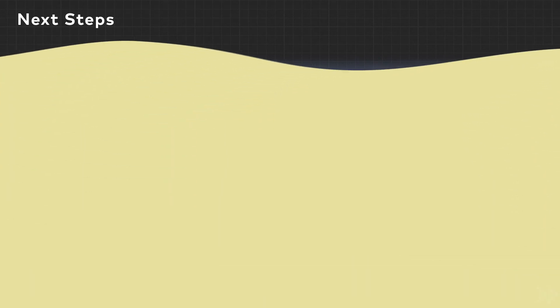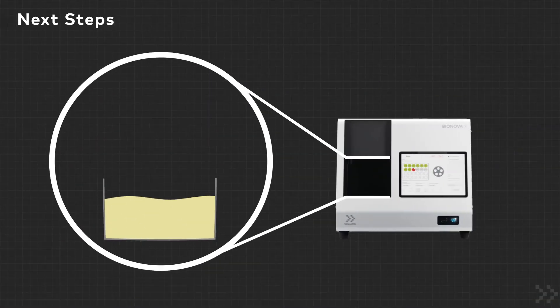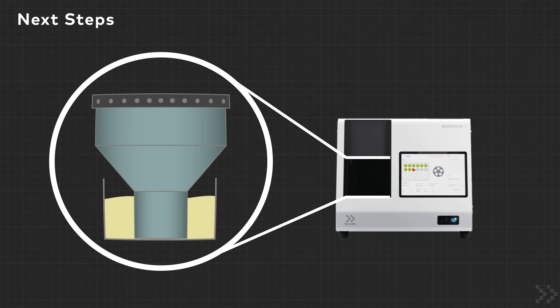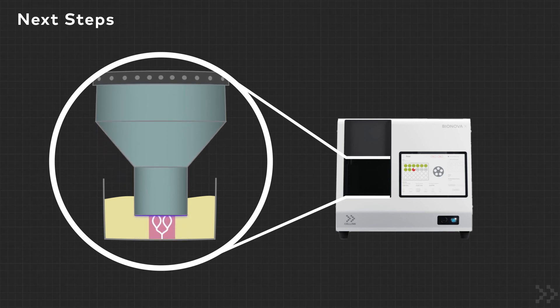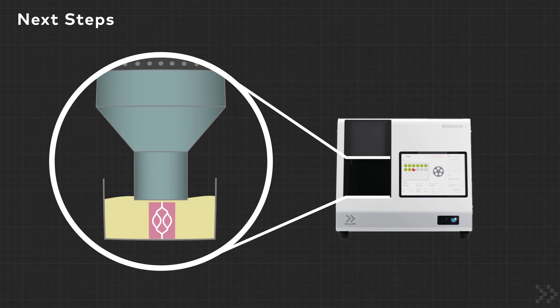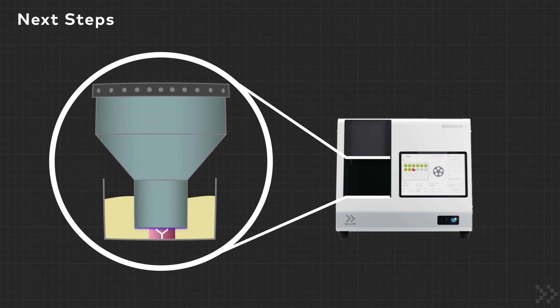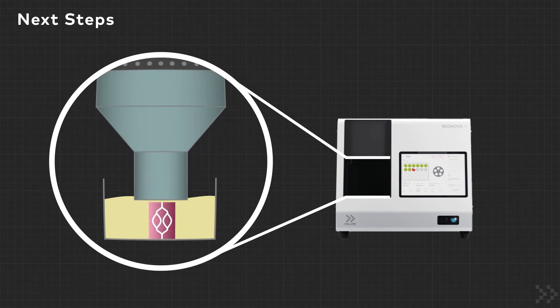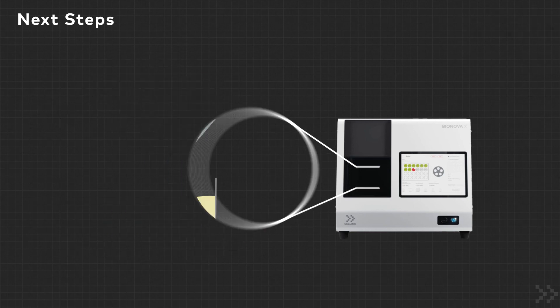After switching to 3D hydrogels, you can spatially control your 3D cell culture by using the Bionova X Digital Light Processing Bioprinter to rapidly 3D print complex cell-laden structures. You can achieve specific stiffnesses or even build in a stiffness gradient for studying cellular migration and mechanosensing.